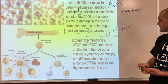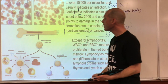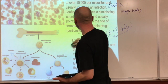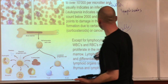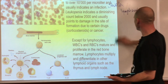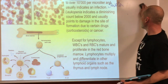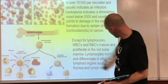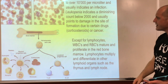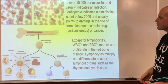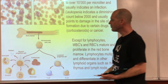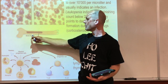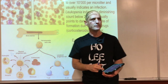Lymphocytes mature - or differentiate - in the thymus, whereas everyone else matures in the red bone marrow. That's the only difference. For now, just think that most blood cells are made in the red bone marrow.